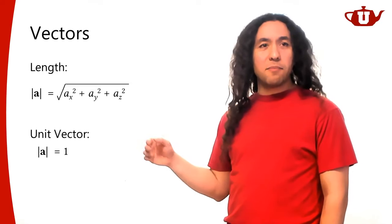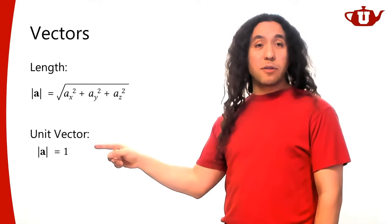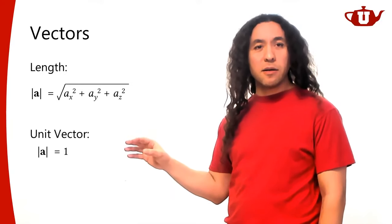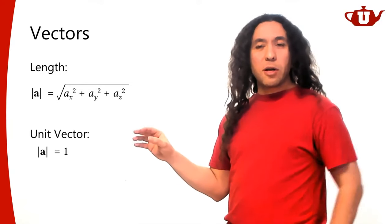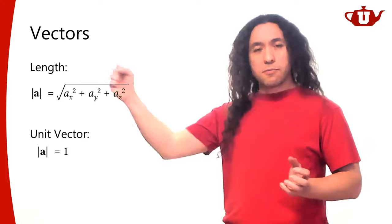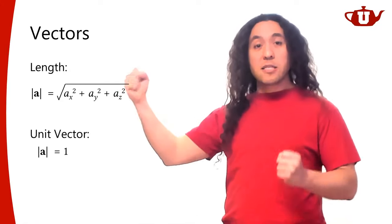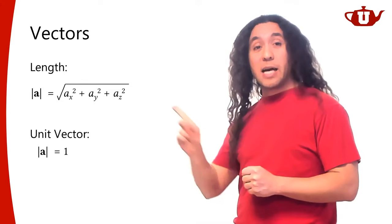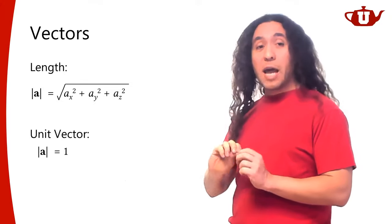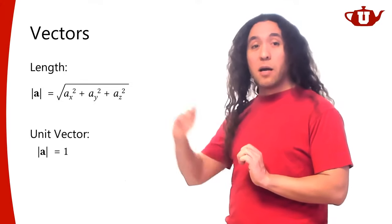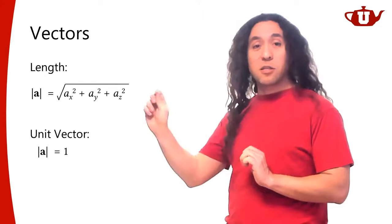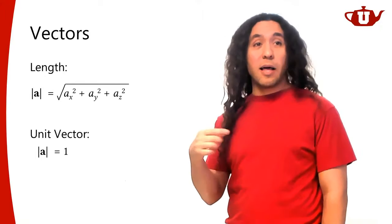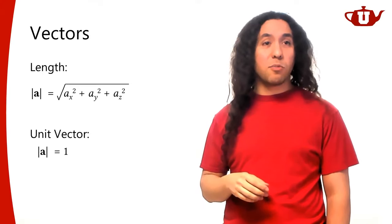We're going to use unit vectors quite a bit — they'll be very important for a lot of our computation. Often we'll take a vector and shrink or adjust its length so it becomes a unit vector, because we only care about its direction, not its magnitude. Converting to a unit vector allows certain mathematical operations.